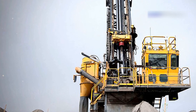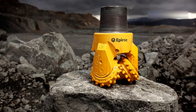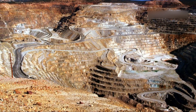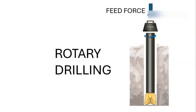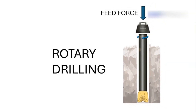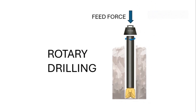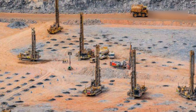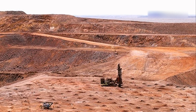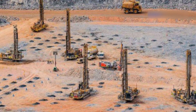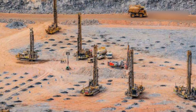Rotary blast hole drills are specialized machines used in open pit and surface mining to create large diameter holes for placing explosives. These holes are critical for fragmenting rock, making it easier to extract minerals. Unlike other drilling methods, rotary blast hole drills rely on a rotating drill bit combined with heavy downward feed pressure to grind and crush through soft and medium hard rocks. These machines are designed to drill large diameter holes, often larger than 200 millimeters, to place explosives for blasting. You'll commonly see them in open pit mines for minerals like gold, limestone, coal, iron ore, and copper.